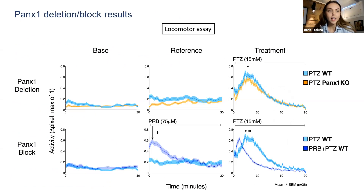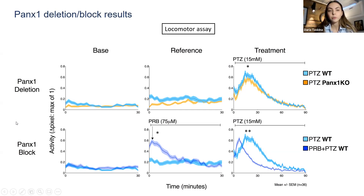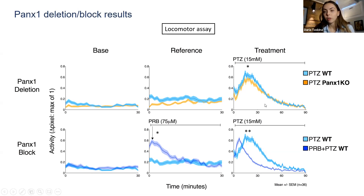For the behavior results, the y-axis is locomotion and the x-axis is time. Looking at the Pannexin-1 deletion model: the blue line is wild type induced with PTZ, and the orange line is the Pannexin-1 knockout. At baseline, they don't differ much in activity. But when treated with PTZ, you can see a spike in hyperactivity that lasts about an hour and then subsides, and you can see how the hyperactivity is reduced in the Pannexin-1 knockout model. This hyperactivity is indicative of those seizure-like events seen in the video.